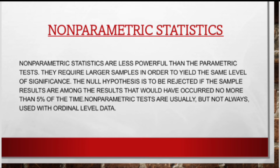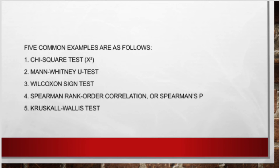Non-parametric statistics: Non-parametric statistics are less powerful than parametric tests and require larger samples in order to yield the same level of significance. The null hypothesis is to be rejected if the sample results are among the results that would have occurred no more than 5% of the time. Non-parametric tests are usually, but not always, used with ordinal-level data. Five common examples are: 1. Chi-square test, 2. Mann-Whitney U test, 3. Wilcoxon Sign test, 4. Spearman Rank-Order Correlation (Spearman's rho), 5. Kruskal-Wallis test.